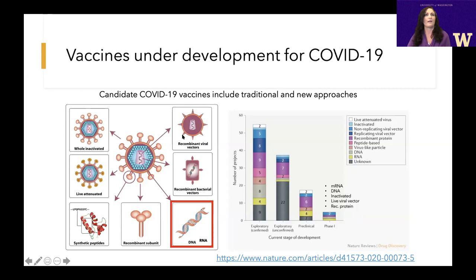Here we are at the end of November. We have a wide variety of different COVID-19 vaccines, including traditional as well as new approaches under development. I'm going to give you a quick primer of the different types of vaccines. There are types we're familiar with, like whole inactivated — that's where you take the pathogen, kill it, and inject it. Our current flu vaccine is an example of a whole inactivated vaccine.